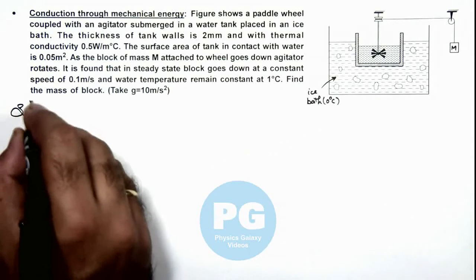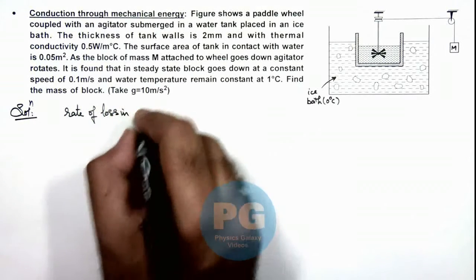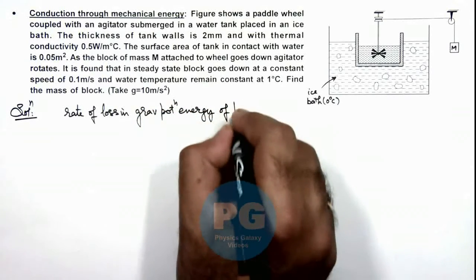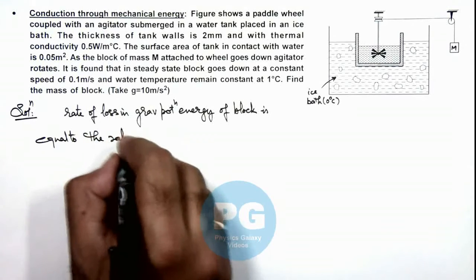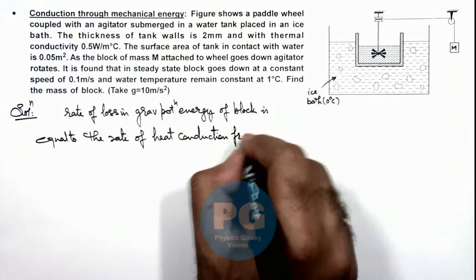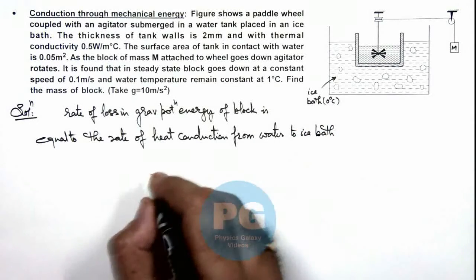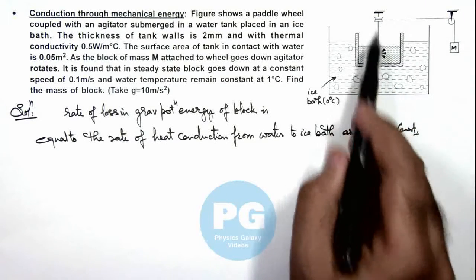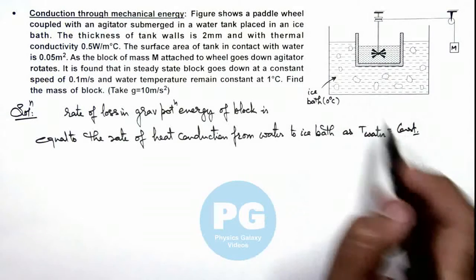First, we can write that the rate of loss of gravitational potential energy of the block is equal to the rate of heat conduction from water to the ice bath. Since the temperature of the water is constant, all the work done on the water by the agitator is conducted as heat from the water to the ice bath.